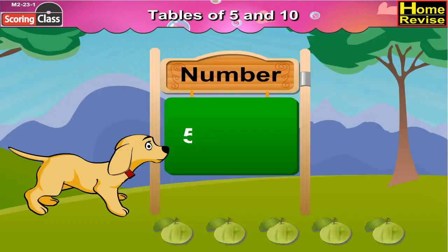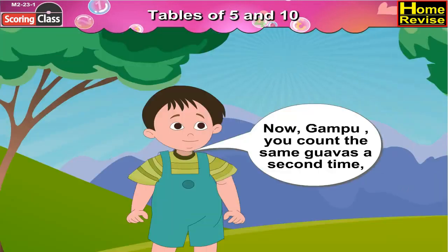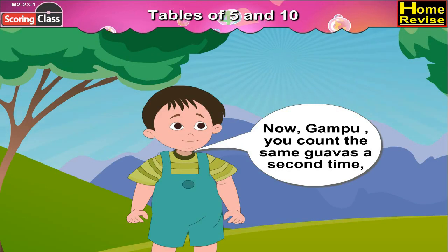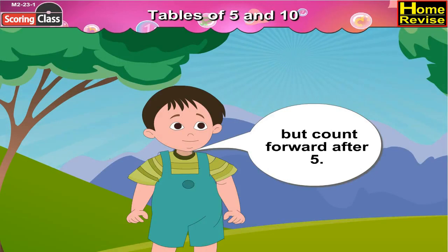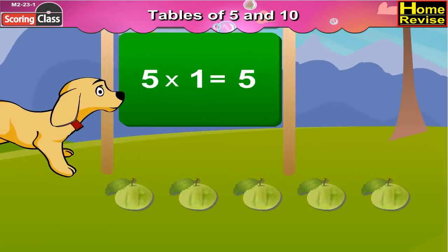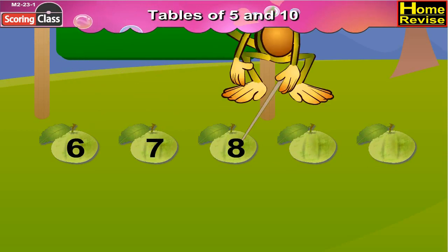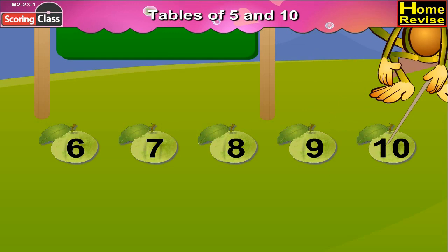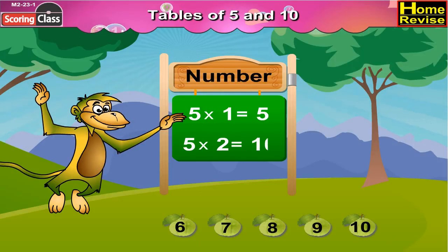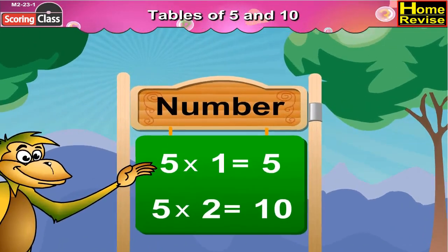Nandu says, 'Moti, you count them once, then write: five multiply by one is equal to five. Five ones are five.' Moti did that. Nandu further says, 'Now Gumpu, you count the same guavas a second time, but count forward after five.' Gumpu counted them as six, seven, eight, nine, ten and wrote: five multiply by two is equal to ten. Five twos are ten.